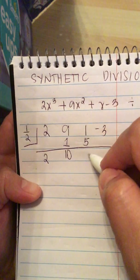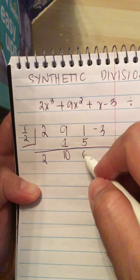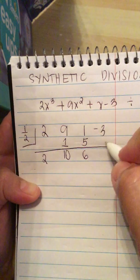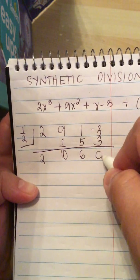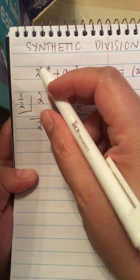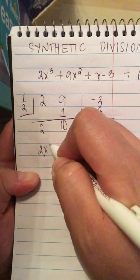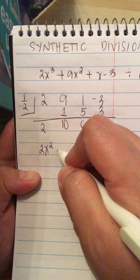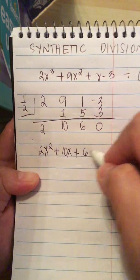And then 1 and 5 is 6. And then we multiply 6 times 1 half is a 3. And minus 3 and a 3 is 0. So now this reduces the polynomial to 2x squared plus 10x plus 6.